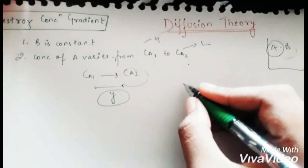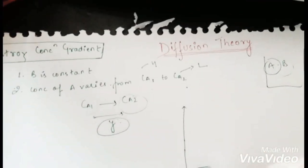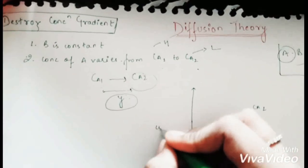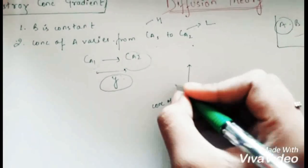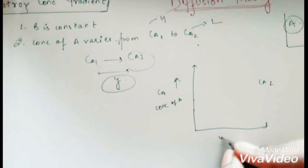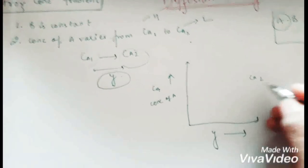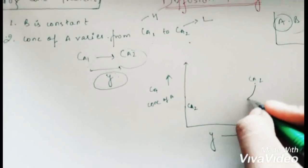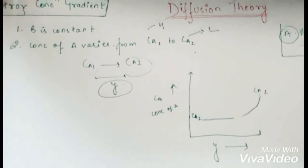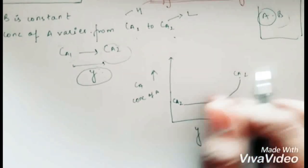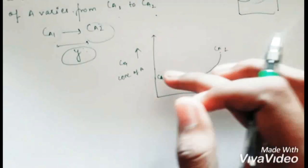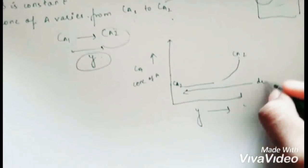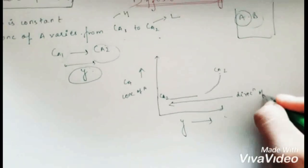Through a figure: Ca is the concentration of A on the y-axis and y is the distance on the x-axis. The concentration moves from Ca1 to Ca2 — from higher to lower — across the distance y. The direction of mass transfer goes from Ca1 towards Ca2.